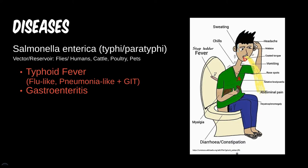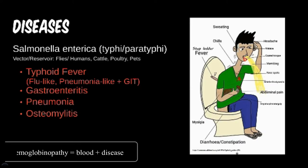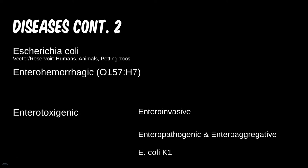Remember with Salmonella, it's often coming out of both ends. Pneumonia is extremely rare and hardly worth mentioning. Osteomyelitis is also rare; however, those with hemoglobinopathies such as sickle cell seem to have an increased risk for this disease. Hematogenous spread is suspected, though the mechanism is not really clear.